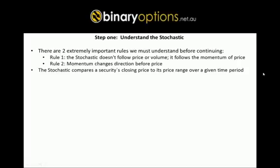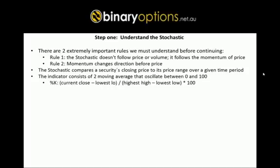The stochastic compares a security's closing price to its price range over a given period of time, and the indicator consists of two moving averages that oscillate between 0 and 100. The first moving average is the %K, and its calculation is the current close minus lowest low, divided by highest high minus lowest low, times 100. The %D is the three-day moving average of %K.